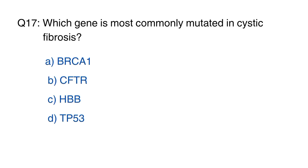Question number 17. Which gene is most commonly mutated in cystic fibrosis? The right option is B, CFTR.